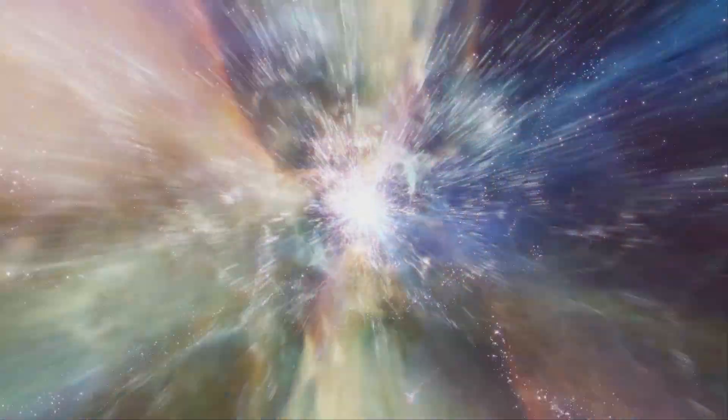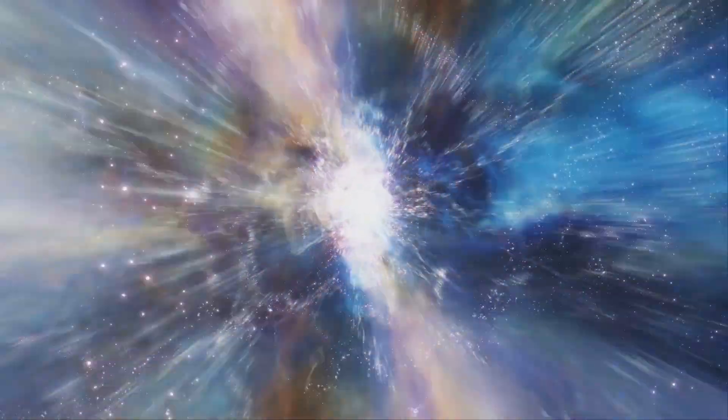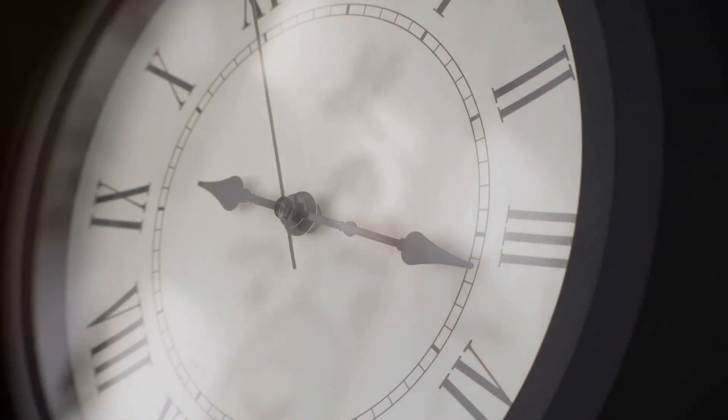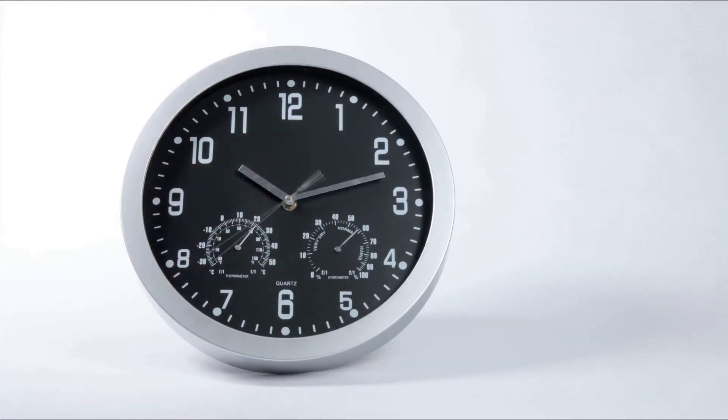The block universe theory is deeply rooted in Einstein's theory of relativity. Einstein's theory of relativity fundamentally changed our understanding of space and time. According to relativity, space and time are intertwined in a four dimensional continuum known as space-time. This means that time is not separate from space, but is another dimension that, together with the three spatial dimensions, forms the fabric of the universe. One of the key insights from relativity is the relativity of simultaneity. This concept tells us that what one observer considers to be happening now might be in the past or future for another observer, depending on their relative motion. This idea supports the notion of a block universe, where all points in time exist equally and simultaneously.